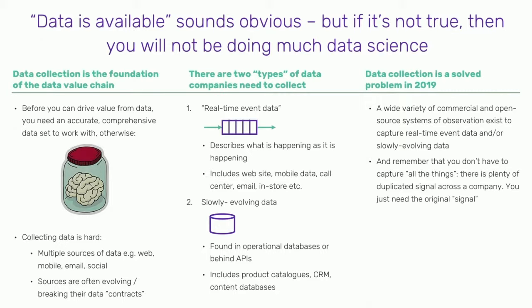Collecting data is super hard. You've got multiple sources coming from different systems. Those systems are unreliable, constantly changing, breaking their data contracts. Fundamentally, there are two different types of data companies are looking to collect: real-time event data from websites, mobile apps, and email systems, and really big important pots of slowly evolving data sitting in systems of record.